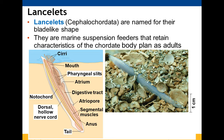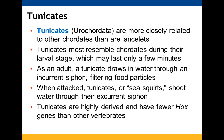The lancelets, or cephalochordates, are named for their blade-like shape. They are marine suspension feeders and retain the cephalochordate body plan. The urochordates, or tunicates, are more closely related to vertebrates than lancelets are. They resemble chordates only in their larval stage, which is very short.